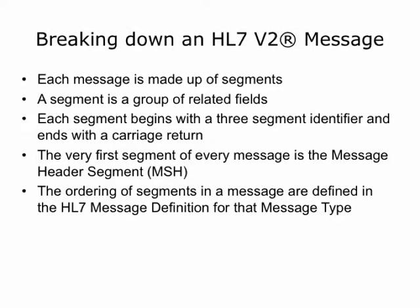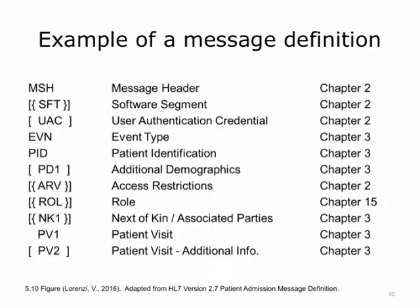Each type of HL7v2 message is defined in the standard with a message definition. The message definition shows what segments can appear in a message, how often, and in what order. It gives the segment IDs, short descriptions, and provides the chapter in the HL7v2 specification where the segment is defined. If a segment is optional, it is surrounded with square brackets. If the segment can repeat, it is surrounded with curly braces. The message definition shown here is for a patient admission message. It requires the MSH, EVN, PID, and PV1 segments. All other segments are optional. The SFT, ARV, ROL, and NK1 segments can repeat. For example, a patient admission can have zero to any number of next-of-kin or associated parties because the NK1 segment is optional and repeats.